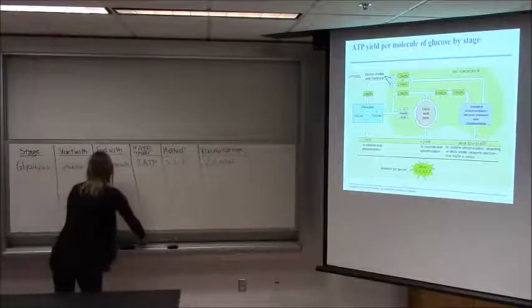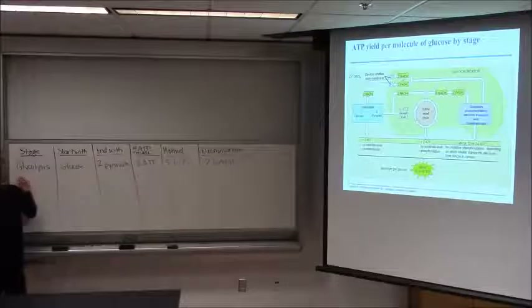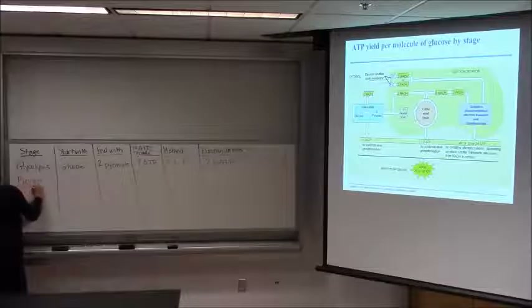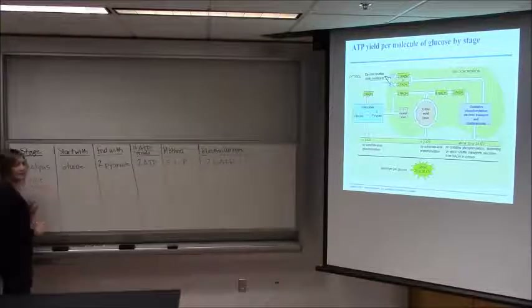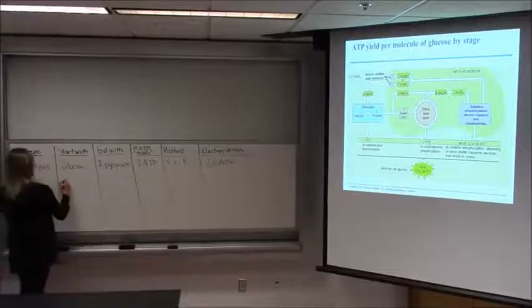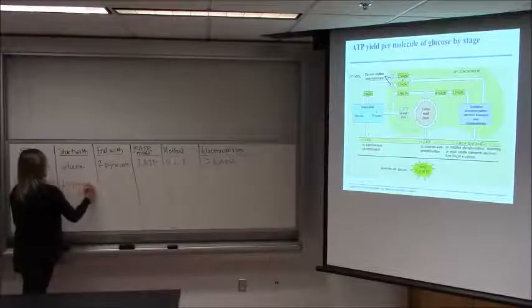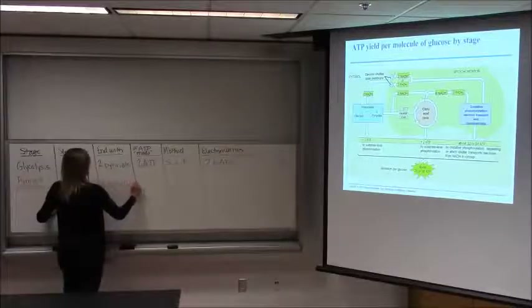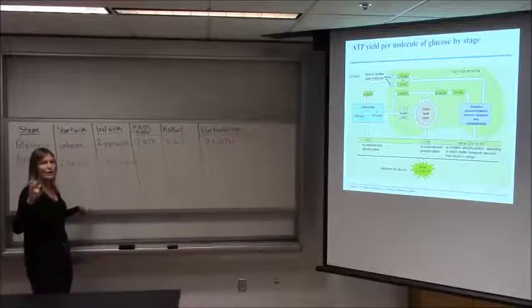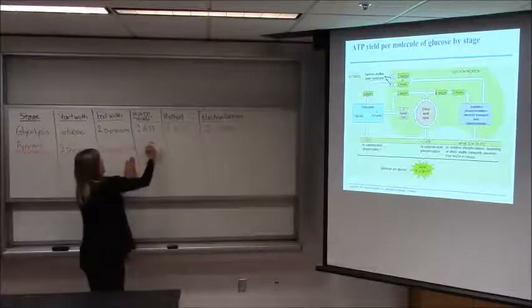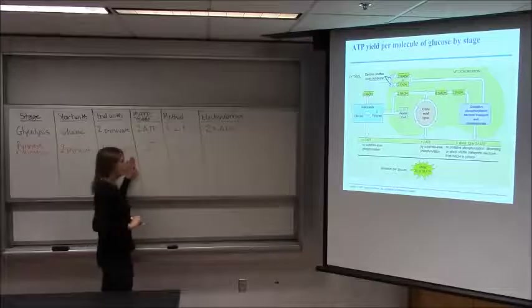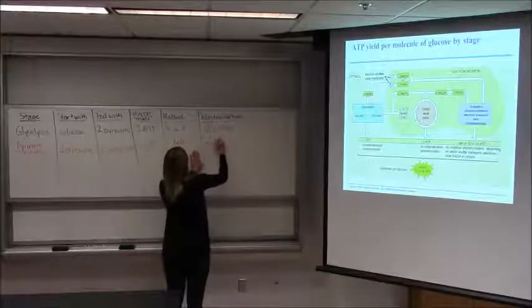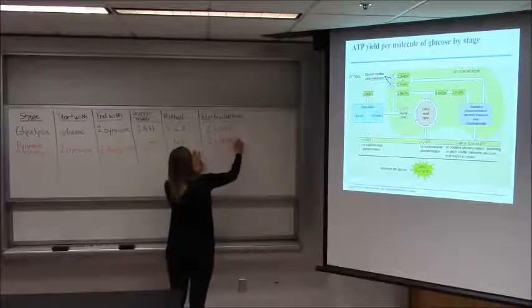Second stage: pyruvate oxidation — sometimes called the transition phase in older textbooks. We start with 2 pyruvate and end with 2 acetyl-CoA. This is what we need to go through the citric acid cycle; we shave off another carbon to create a two-carbon molecule. We make zero ATP during this phase — not applicable — but we do produce 2 NADH.